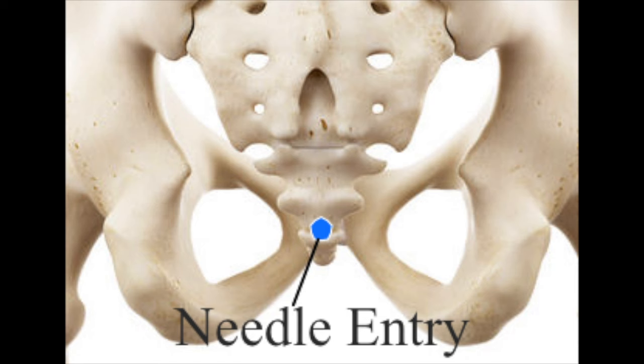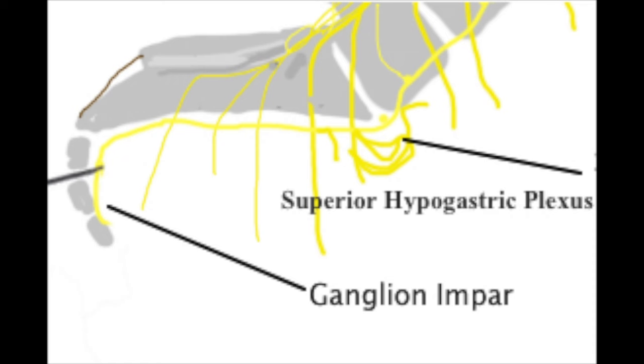The needle entry point is between the coccygeal bones through a ligament. Here we describe the out-of-plane technique with confirmation with fluoroscopy.